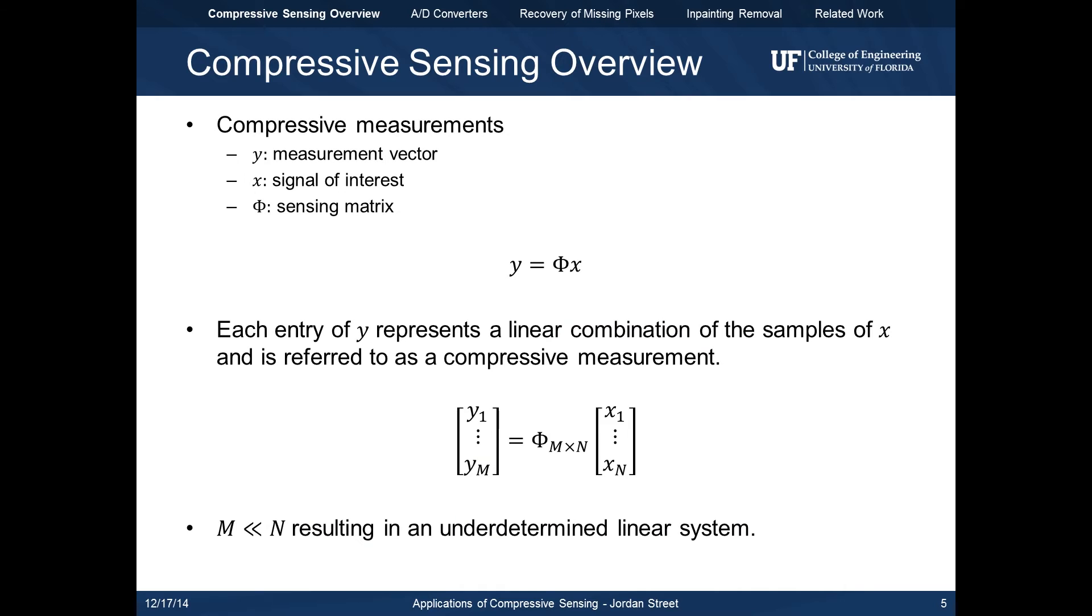So how do we take advantage of this sparsity? Let's first talk about compressive measurements. You can think of these measurements in terms of matrix multiplication. Each measurement y is a linear combination of the elements of x with the weighting factors being assigned by the matrix phi. By taking fewer measurements than there are elements of x, we result in an underdetermined linear system.